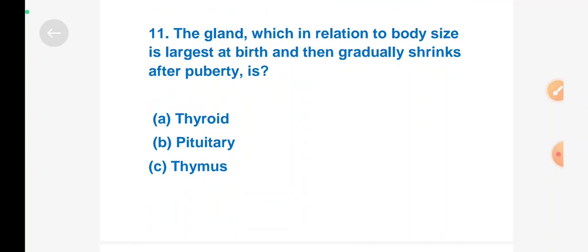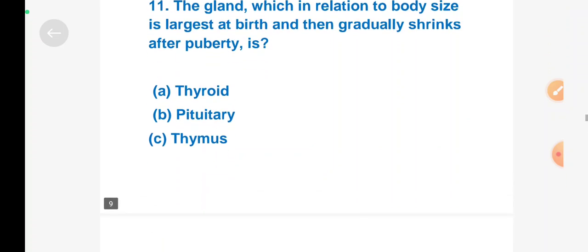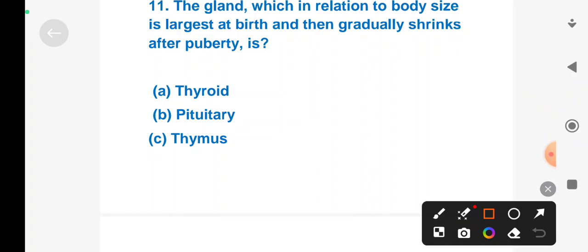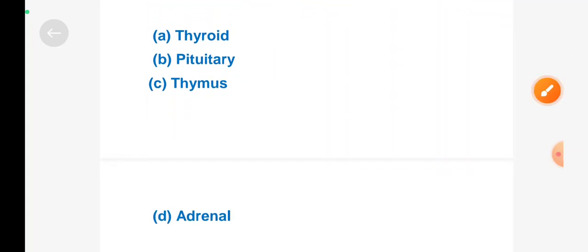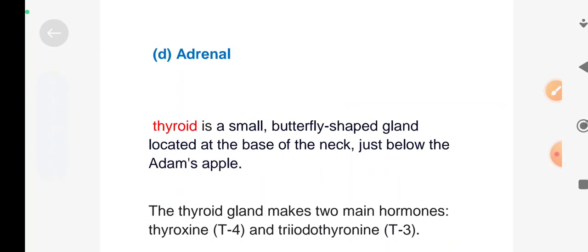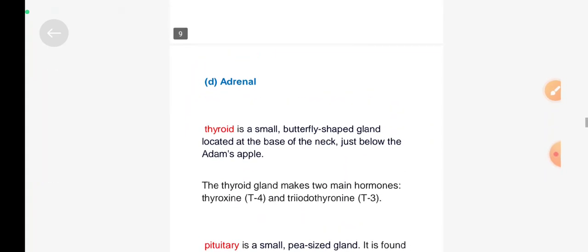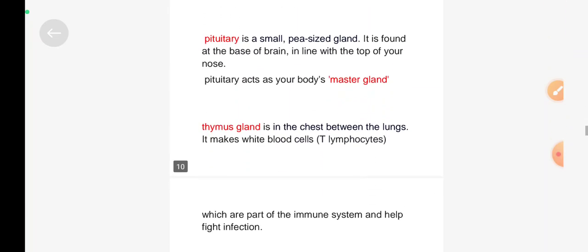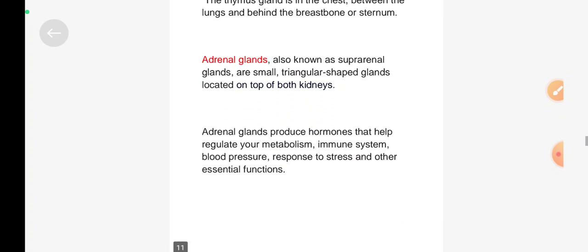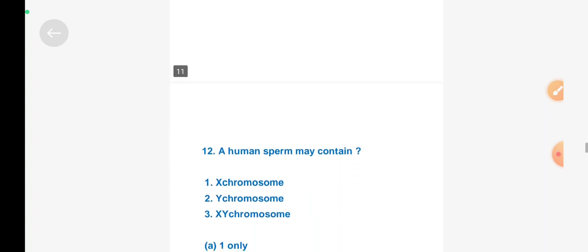Next question: The gland which in relation to body size is largest at birth and then gradually shrinks after puberty is - Option A: thyroid, Option B: pituitary gland, Option C: thymus gland, Option D: adrenal. Right answer is Option C, thymus gland. Thymus gland is in the chest between the lungs. It makes white blood cells, T lymphocytes, which are part of the immune system and help fight infection. The thymus gland is in the chest between the lungs and behind the breastbone or sternum. After puberty, this thymus can start to shrink and become replaced by fat.